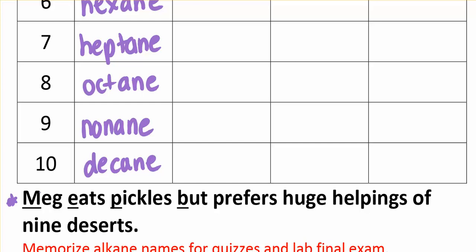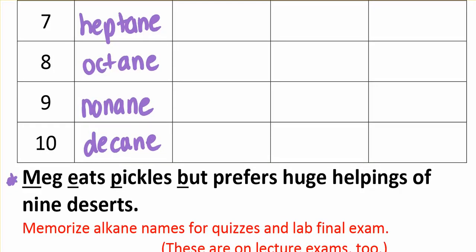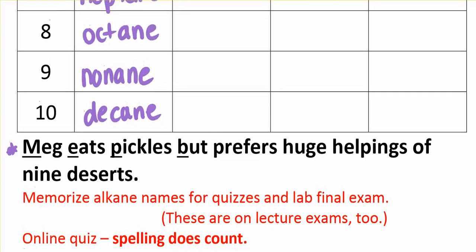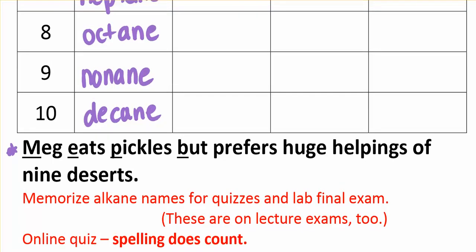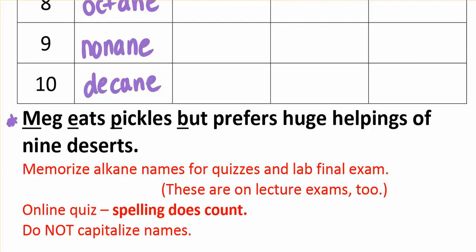Especially those first four — methane, ethane, propane, butane — don't make sense with the numbers so much. Use that mnemonic to make sure you know them. You'll need them for the quizzes and the lab final exam. On the online quizzes you may have to type these, and even if you look them up, make sure the spelling is exactly correct. Also, do not capitalize these names. We have a bad habit of capitalizing names of elements and compounds, but they really are not capitalized unless they're in a table or a title. So do not capitalize these and make sure you can spell them.